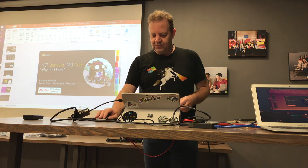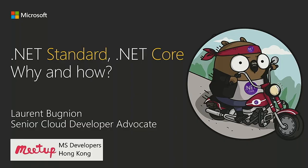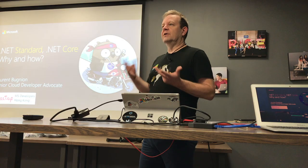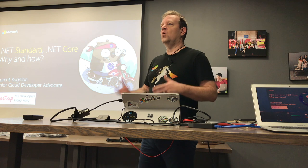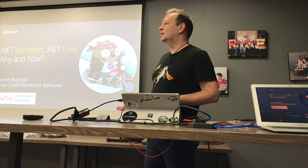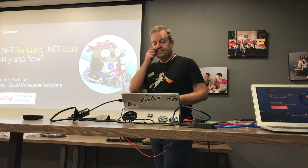So I'm going to talk to you about .NET Standard and .NET Core. This is a talk that I've been presenting already a few times, but it's always required again and again. I think it's a good thing because there is some misunderstanding around .NET Standard and .NET Core: are they the same? Are they different? Why should we use them? What good are they? So I'm going to try to clarify that a little bit.